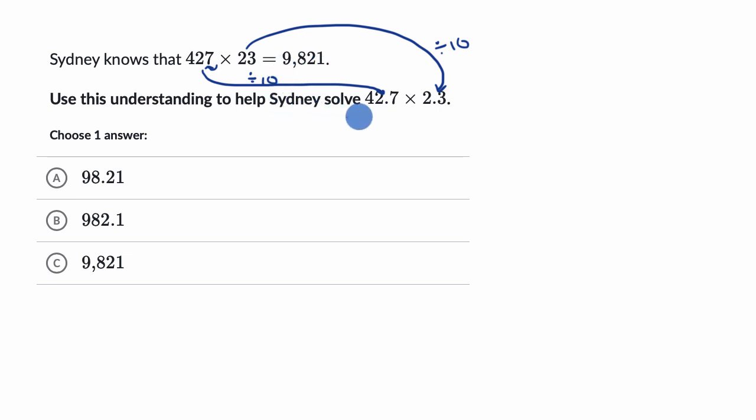But another way to think about what this would be is it's going to be the same product. We're just going to have to divide by 10 a few times, or we're going to have to move the decimal. And one way to think about it is we can estimate what, say, 40 times two is, and think about which of these is close to that. If I were to say 40 times two, 40 times two is equal to 80. So which of these are even remotely close to 80?